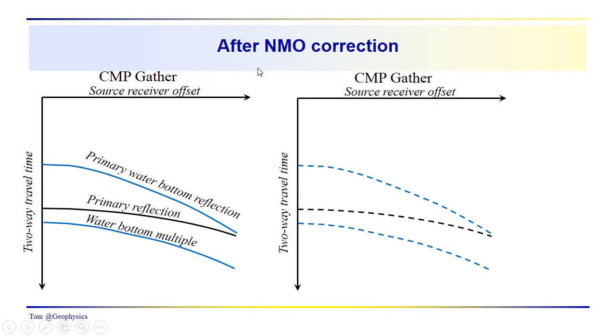Okay. So how do we handle it? Well, we've been talking about the normal moveout correction. We've been talking about stacking. Here's a common midpoint gather. Here's a primary reflection. This would be the primary water bottom reflection. This is the primary reflection from some sub-bottom interval. This is the water bottom multiple. And notice it has a greater moveout than the primary reflection.